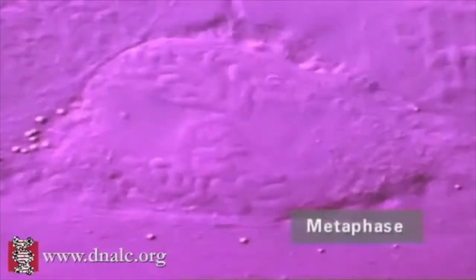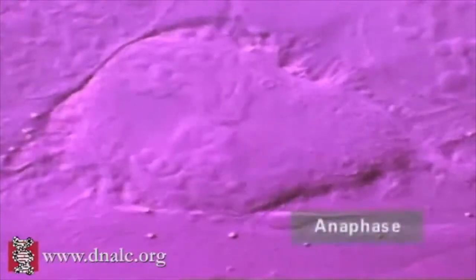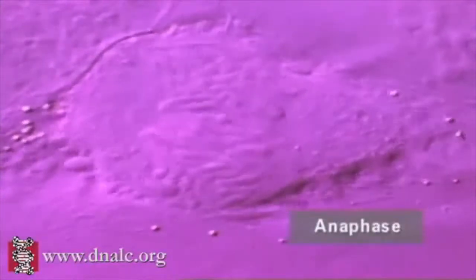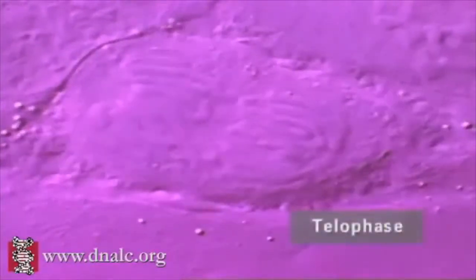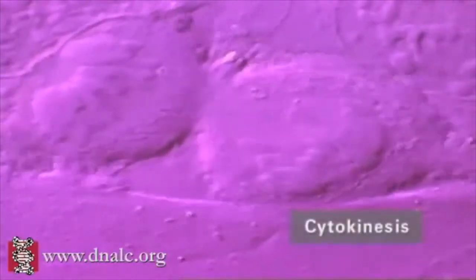It is important to realize that chromosomes are not always present. They form only when cells are dividing. At other times, as we can see here at the end of cell division, our DNA becomes less highly organized.